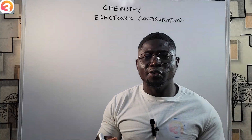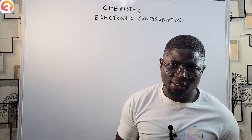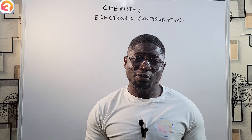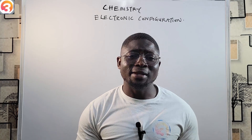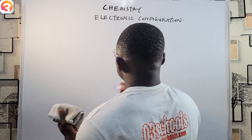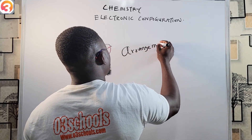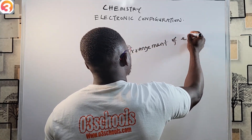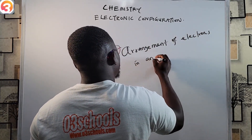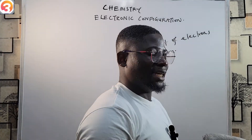Electronic configuration is simply the arrangement of electrons in an atom. That is the simplest, most basic definition of electronic configuration — the arrangement of electrons in an atom. This is what electronic configuration literally entails.